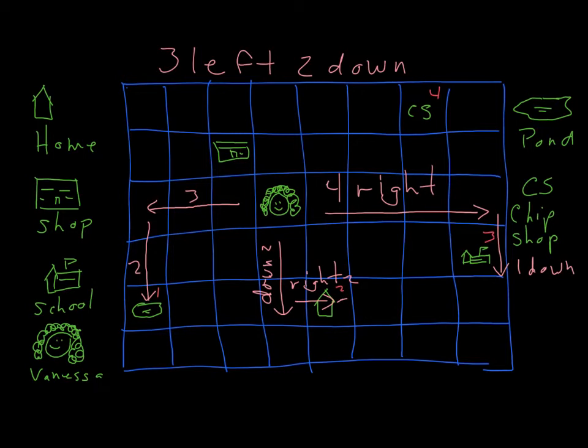And our final one will be the chip shop. Again, Vanessa could, we'll start here, but she could go right and then up, or she could go up and then right. So let's go this direction because I've already written over here. So let's go up and then right. So she's going to go up two squares, one, two, and then right one, two, three.